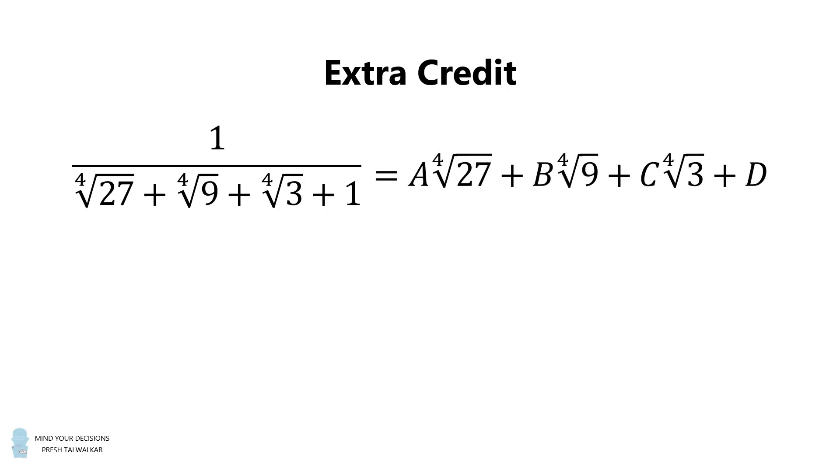I want to end the video with a little bit of extra credit. Suppose 1 divided by the 4th root of 27 plus the 4th root of 9 plus the 4th root of 3 plus 1 is equal to a multiplied by the 4th root of 27 plus b multiplied by the 4th root of 9 plus c multiplied by the 4th root of 3 plus d. If a, b, c, and d are rational numbers, what is the sum of a, b, c, and d?